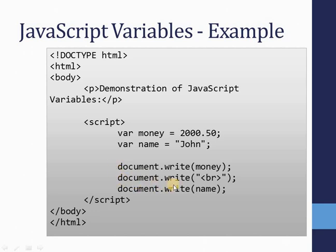After declaring the variables and initializing values, there are three statements where I print them on screen using `document.write()` — the method to write content on a web document. Notice that the variable name is not included in double quotes. Whenever you are printing a variable name, you don't use double quotes — you just write it as an argument. This is how you declare, initialize, and print a variable in JavaScript.